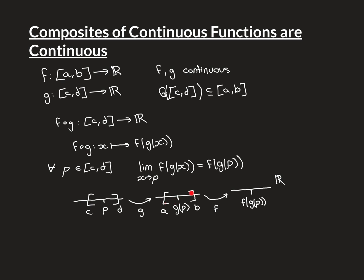So p is mapped to g(p) inside the interval [a, b], and then g(p) is mapped by f onto f(g(p)), somewhere in the real line. This picture nicely represents the composite function f∘g.